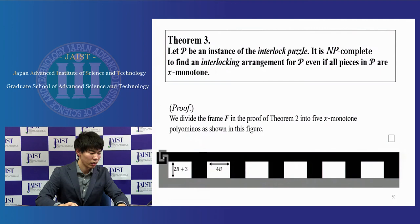Theorem 3. Let P be an instance of interlock puzzle. It is NP-complete to find an interlocking arrangement for P, even if all pieces in P are X-monotone. Proof. We divide the frame F in the proof of Theorem 2 into 5 X-monotone polyominoes, as shown in this figure. Then, we have that statement.